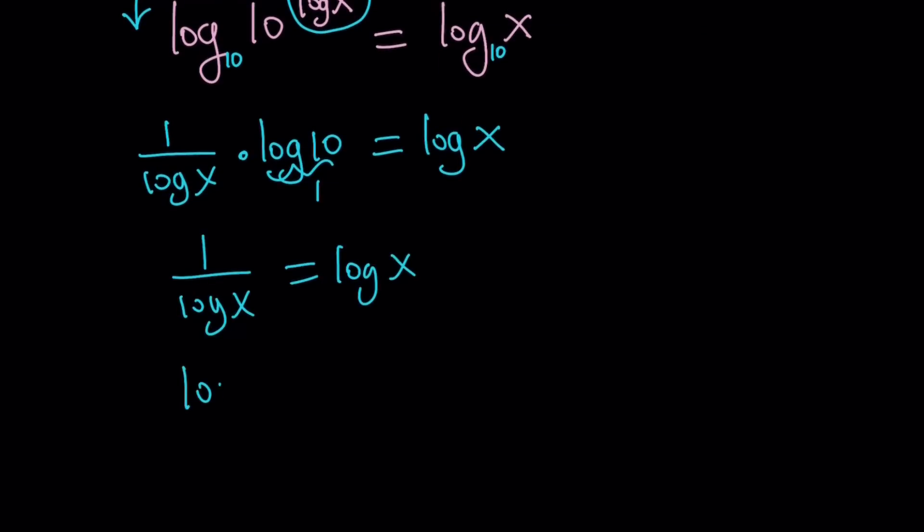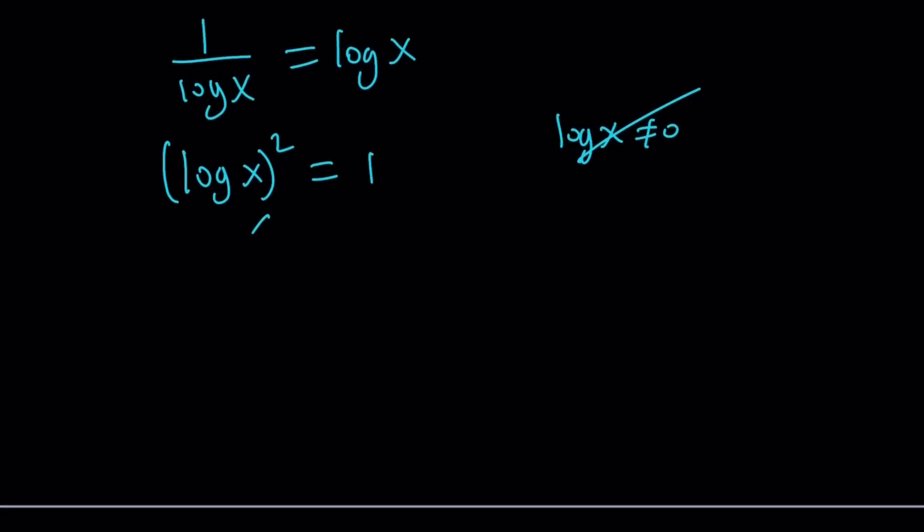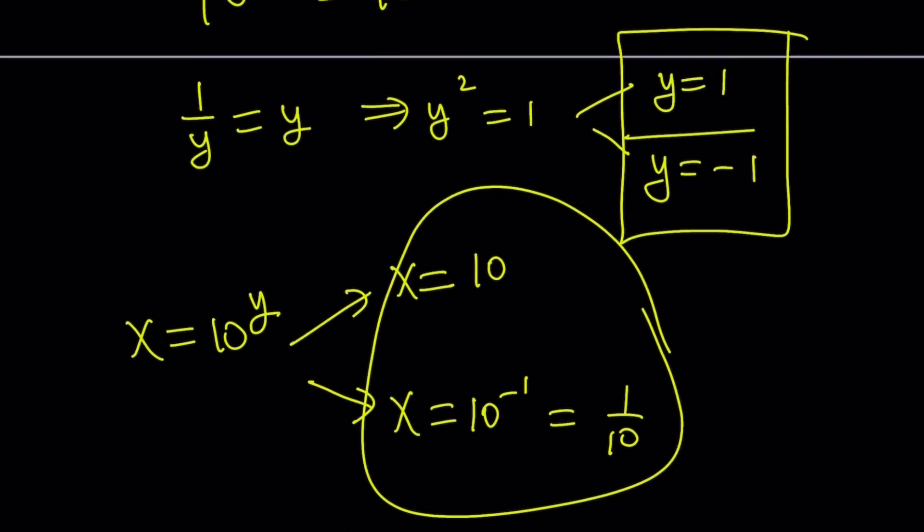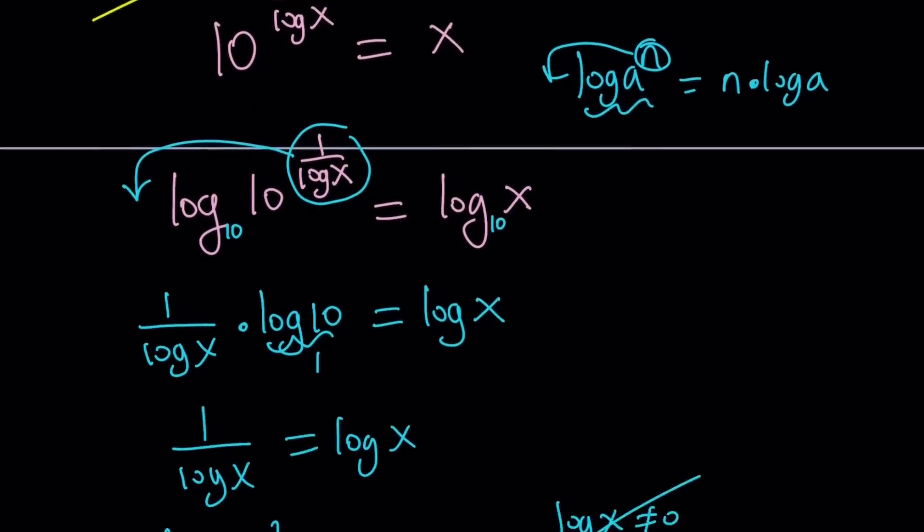And log 10 since it's base 10 this is 1. So I don't have to worry about it. And I get the nice equation 1 over log x equals log x. And this gives us something interesting. Log x squared equals 1. We have to make sure that log x does not equal 0 but it's not going to be 0. When something squared is 1 it's not going to be 0. From here we get two results. Log x is 1 or log x is negative 1. Just like before we used substitution for the first method. And we said let log x be equal to y.